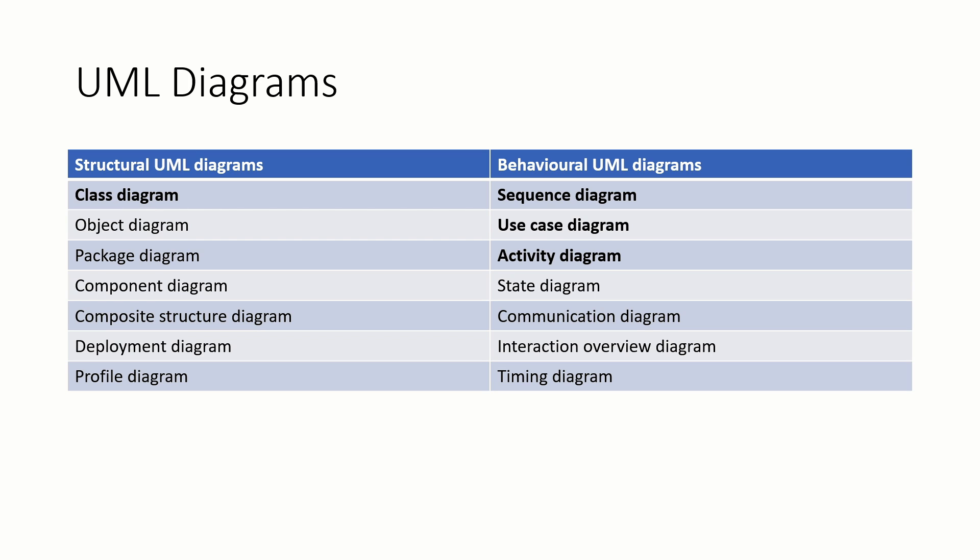The structural UML diagrams include: class diagram, object diagram, package diagram, component diagram — these are nested levels where class is the main entity, then objects, then package, then component. There is also composite structure diagram, deployment diagram, and profile diagram. The most useful diagram from the structural side for developers is the class diagram, which shows how different classes are correlated and linked with each other, allowing you to start writing code from that.